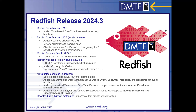We also added new properties and actions to account service and manager account for more generalized time-based one-time password management. We also added local account types and local OEM account types to the role mapping property in both account service and external account provider. The purpose of this is to further control access for what types of features a user is able to access when authenticating through an external account provider like LDAP or Active Directory. Maybe you want to restrict those users to only have Redfish access and not have SSH access to your system — so it gives you that type of configurability now.